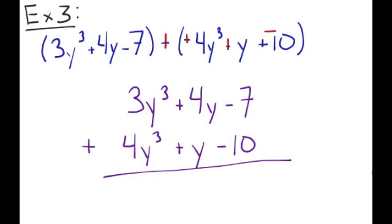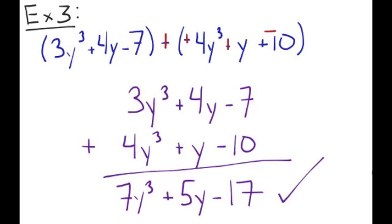And we're just going to go through, add them, combine like terms. 3y cubed plus 4y cubed is 7y cubed. 4y plus y is 5y. And negative 7 minus 10 is going to be negative 17. Hopefully you did that correctly.